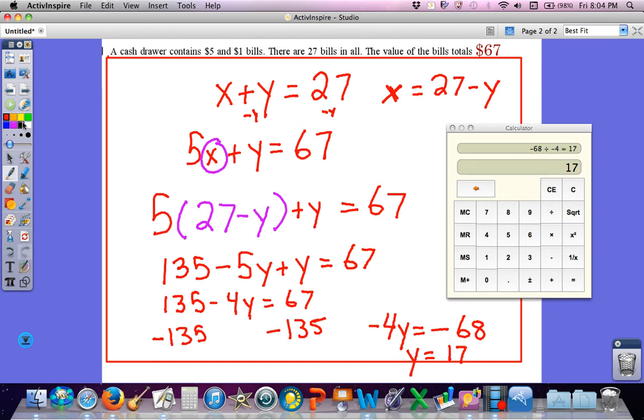Remember, Y was my $1 bills. So like I saw before, I have 17 $1 bills, and that would mean I would have 10 $5 bills. So it's a matter of which way works best for you. I think elimination works best, but you could do this problem with substitution.